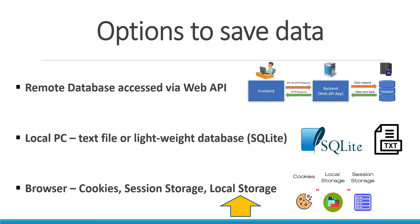Every time we save something in local storage it will be there until we delete it either manually or programmatically. The most common usage for local storage is a shopping cart - if you accidentally close your browser, all items you put in the shopping cart would still be there when you come back. Another very common usage is to keep JSON tokens used for authentication and authorization.